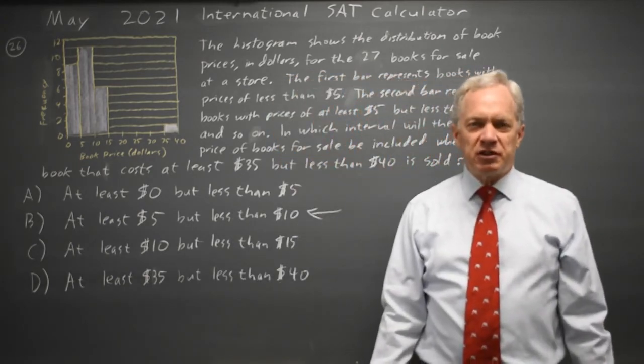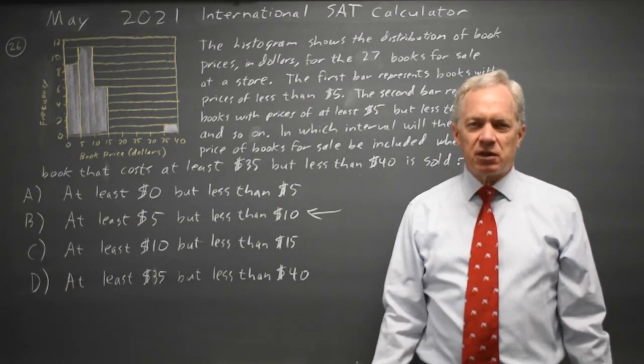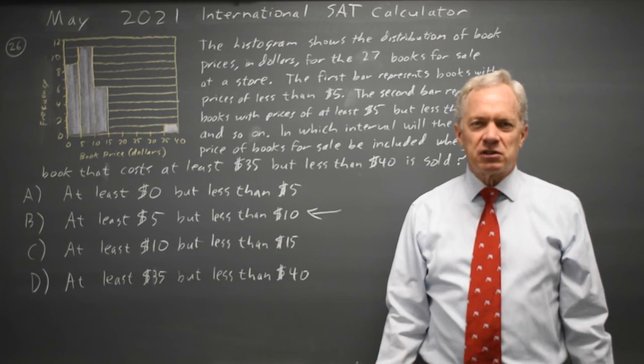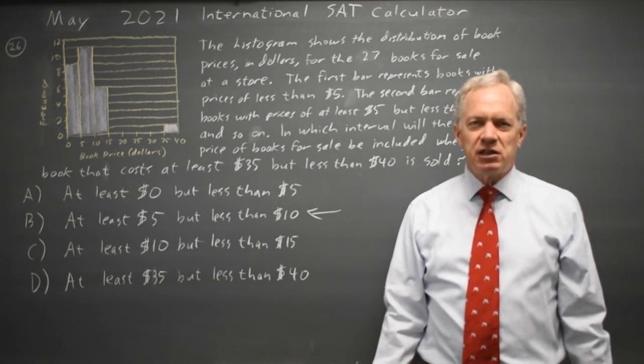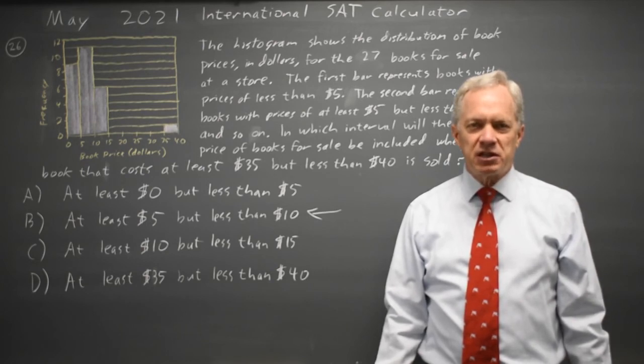Always remember the definition of median which is the middle number listed smallest to largest, or if there's an even number of values it's midway between the two middle numbers. The mean is if you add up all the values and then divide by the number of values you added up.